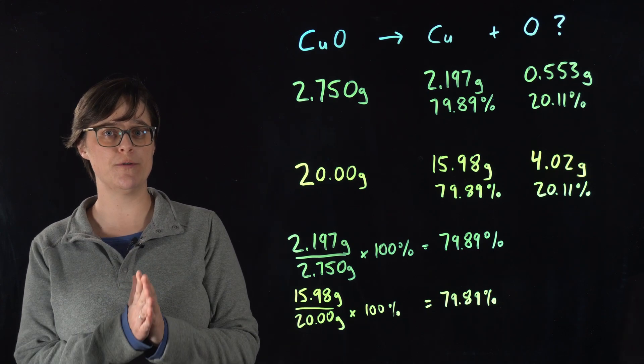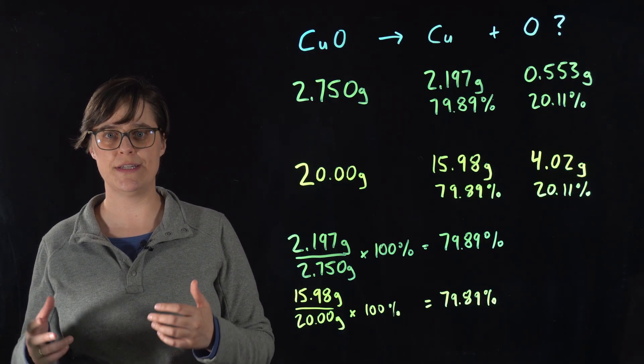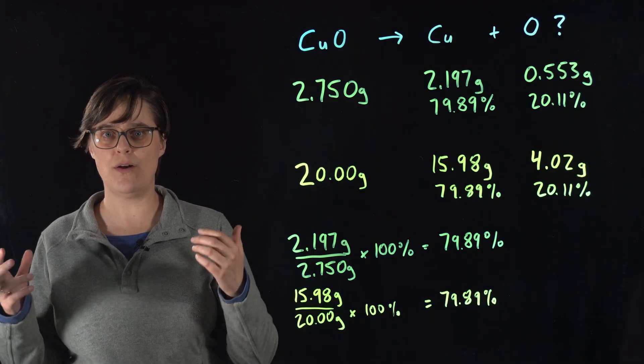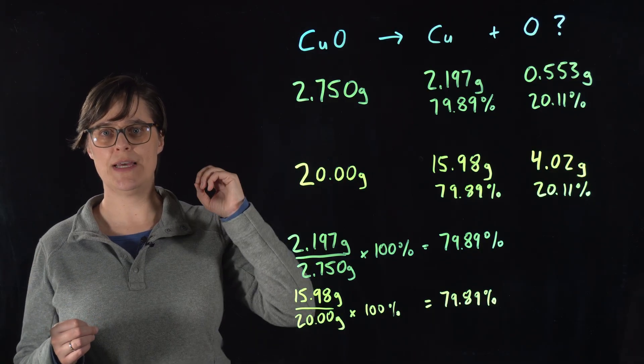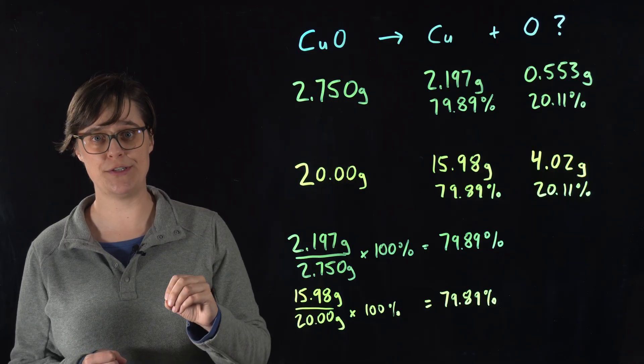Proust performed similar experiments on copper carbonates, various iron sulfides, two tin oxides, all with the same results. The masses of elements in compounds are in fixed ratios.